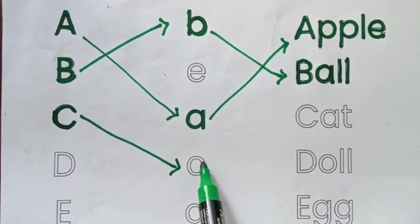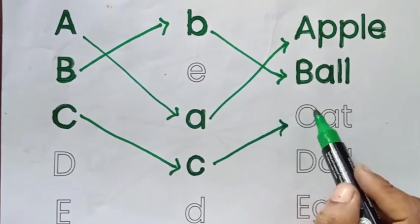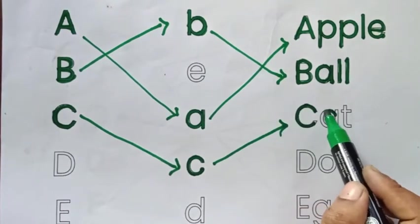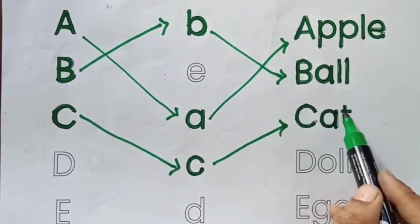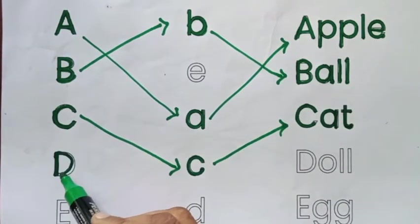Capital letter C, Small letter C, C for Cat. C, A, T. Cat, C for Cat.